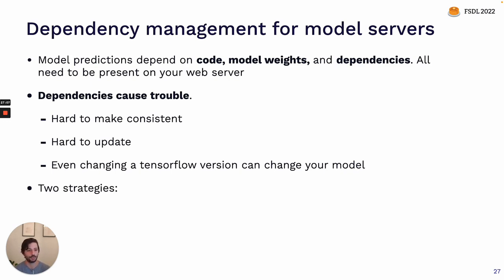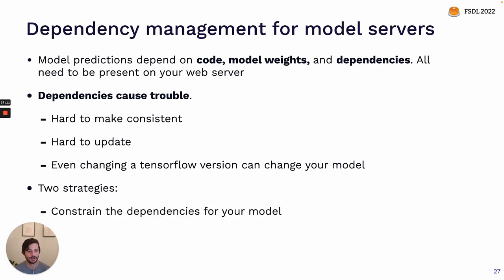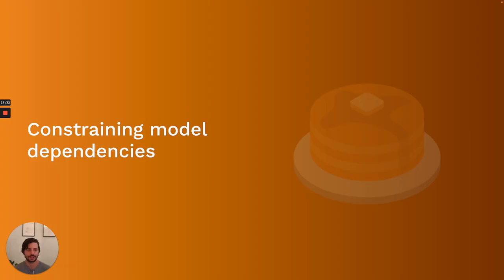Dependencies are also hard to update — if you update dependencies in one environment you need to update them in all environments. In machine learning in particular, since a lot of these libraries are moving so quickly, small changes in something like a TensorFlow version can change the behavior of your model. At a high level, there are two strategies for managing dependencies: the first is to constrain the dependencies for just your model by saving it in a format that is agnostic and can be run anywhere; the second is to wrap your entire inference program into what's called a container.